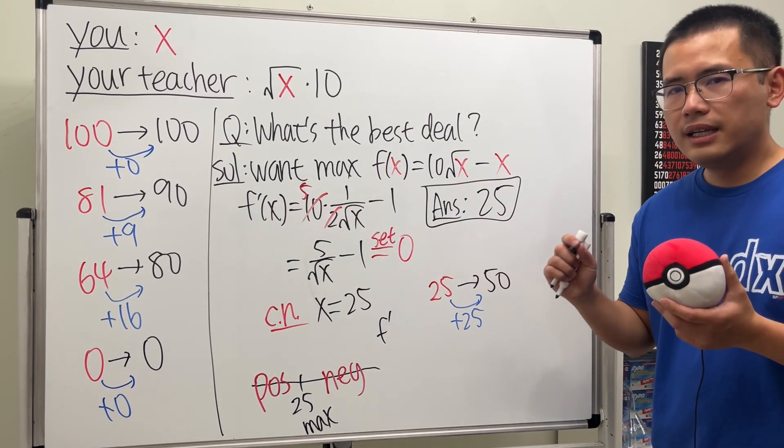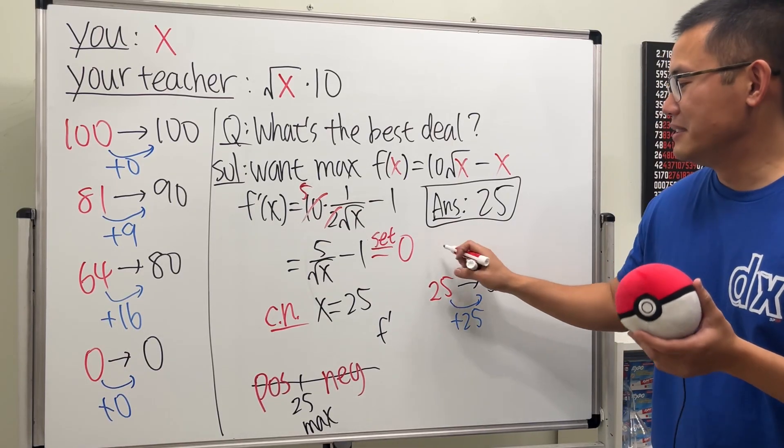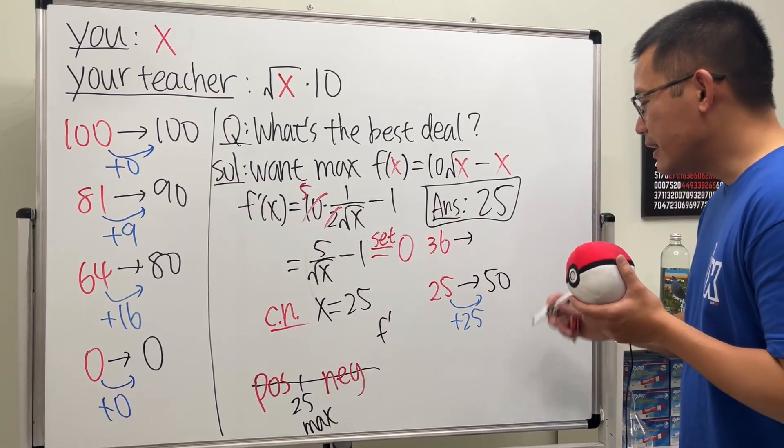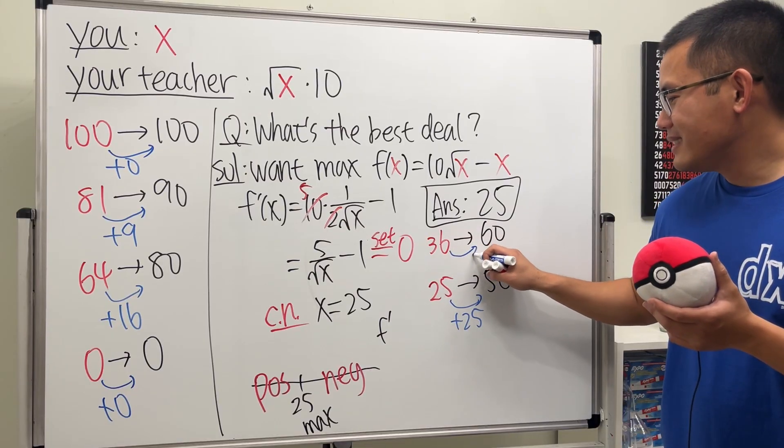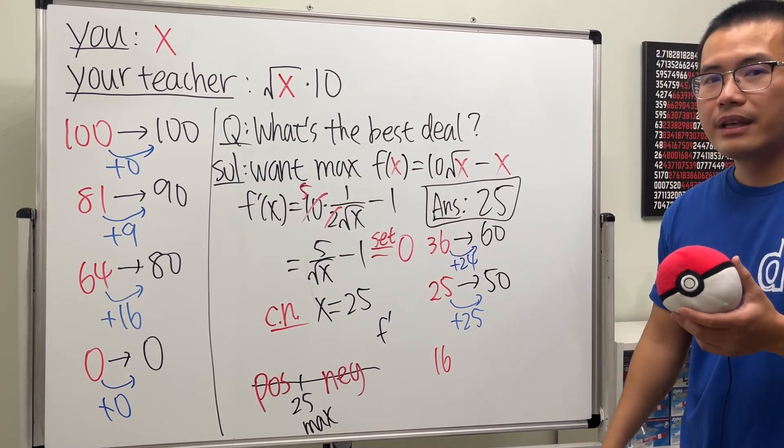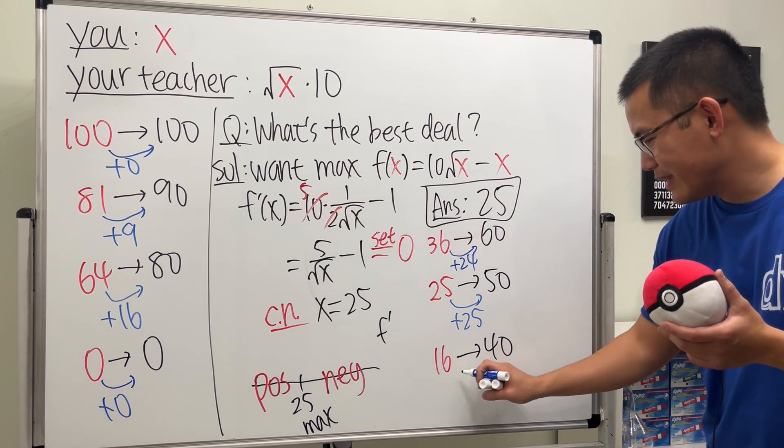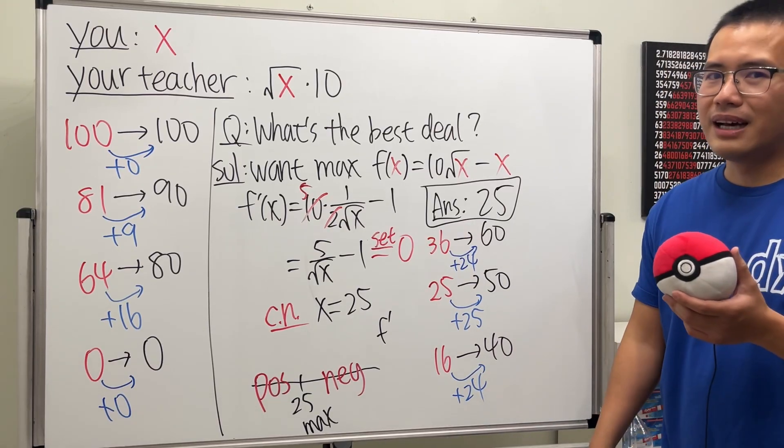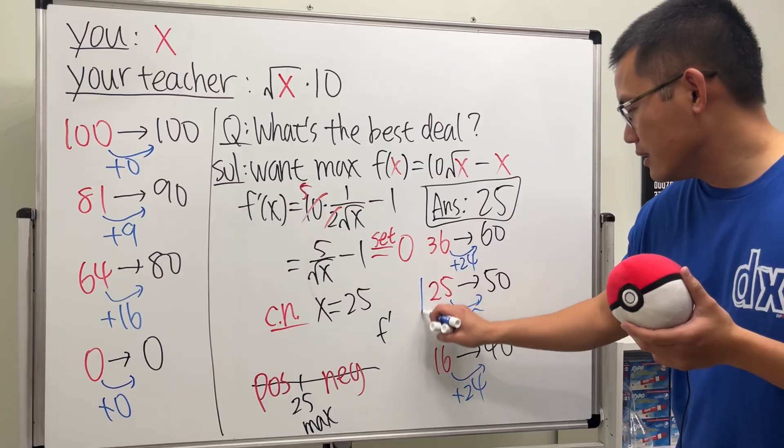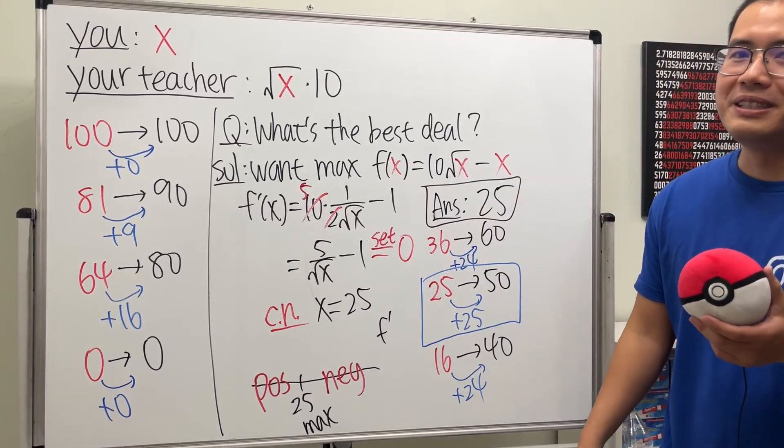Well, if we scored a little bit higher, I don't want to use 26 because the square root of 26 is not nice. So I will use 36. Okay. Square root of 36 is 6. Multiply by 10 is 60. Have a look. From 36 to 60, we get just plus 24. But if you see, if we have 16 here, square root of 16 is 4 times 10 is 40. So guess what? From here to here, it's just plus 24. So indeed, 25 will give us the maximum additional points. So I will say that would be the best deal.